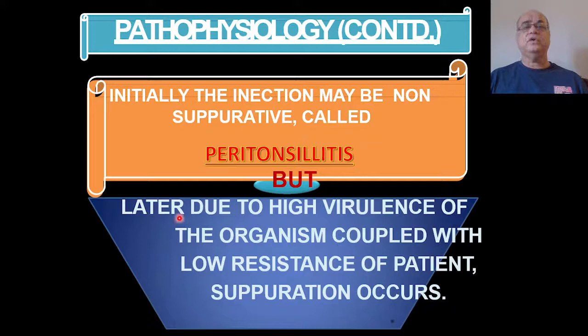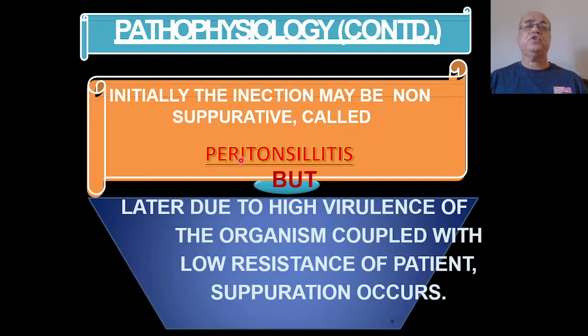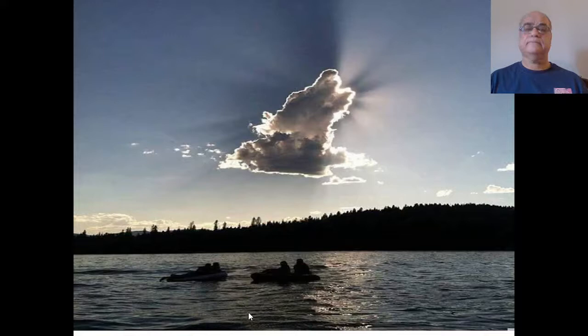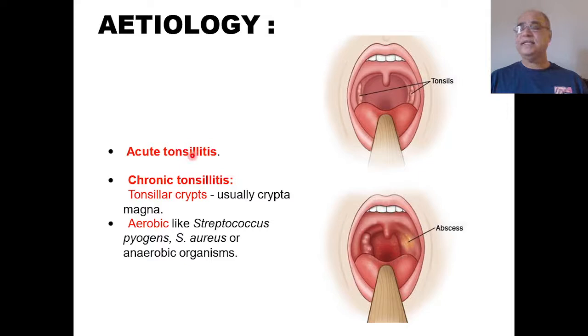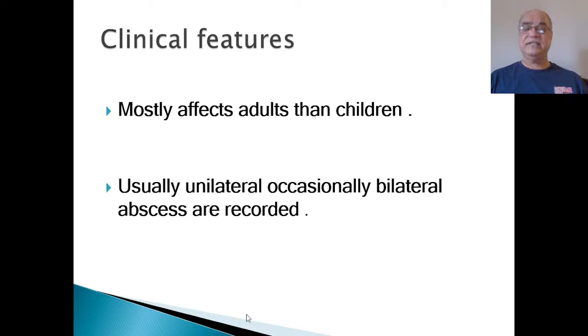When it is non-suppurative we call it peritonsillitis, but later on due to the high virulence of the organism coupled with low resistance of the patient, suppuration can occur, and the disease transforms from peritonsillitis to peritonsillar abscess or quincy. Usually it is secondary to acute tonsillitis, but in chronic tonsillitis the tonsillar crypts — usually the crypta magna — are the culprit. Bacteriology is usually mixed: Streptococcus and Staphylococcus aureus, or even anaerobic organisms can be involved. It mostly affects adults more than children and is usually unilateral, though very occasionally bilateral abscesses are mentioned in the literature.